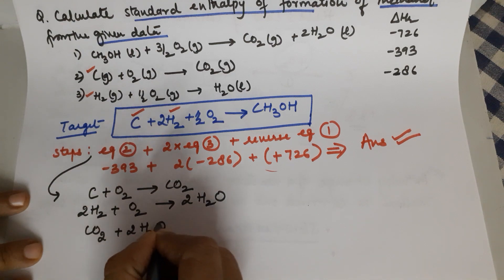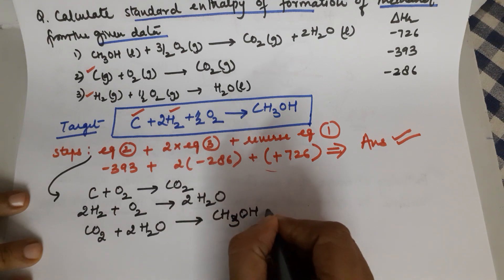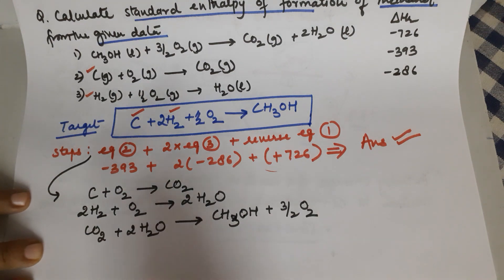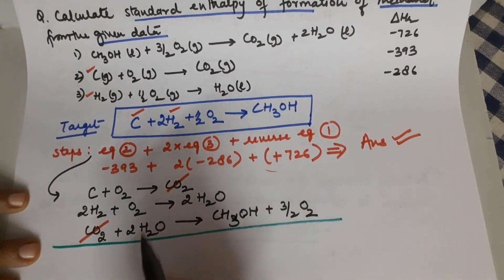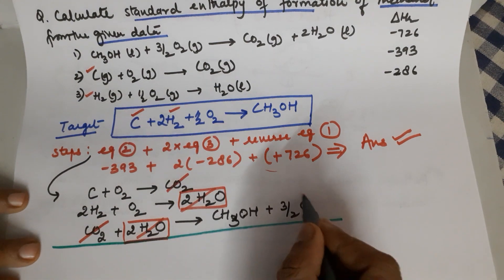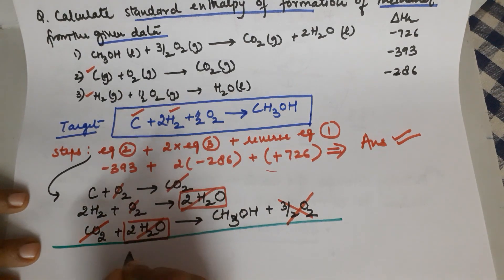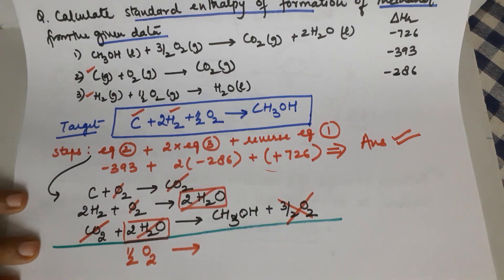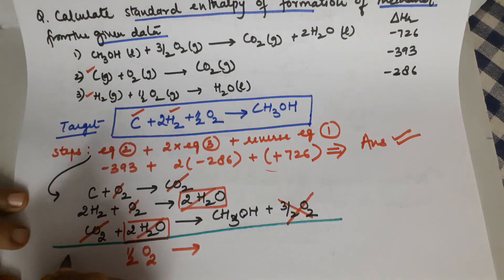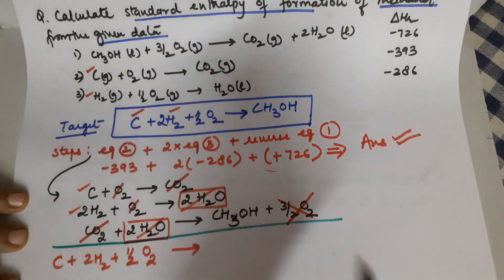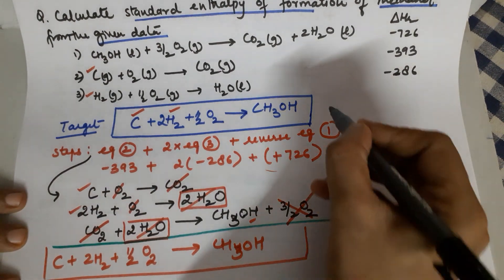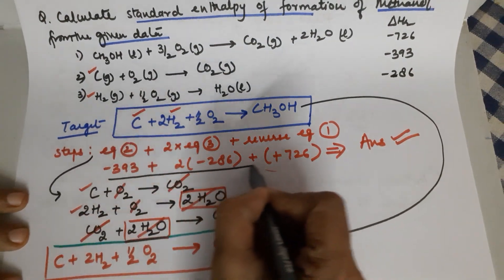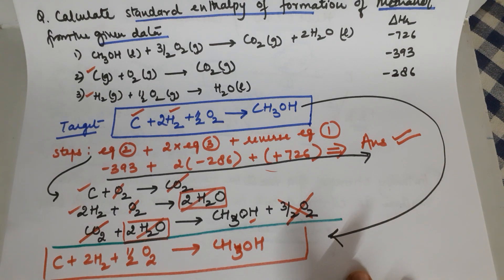Now applying the steps: equation two as it is — carbon plus oxygen gives CO2. Equation three multiplied by two — twice H2 plus O2 gives twice H2O. Equation one reversed — CO2 plus twice H2O gives methanol plus three-halves O2. Cancelling: CO2 cancels, 2H2O cancels; you have two moles of oxygen and one and a half — cancel the one and a half, leaving half O2. You are left with carbon, 2H2, and methanol — the target equation is achieved.